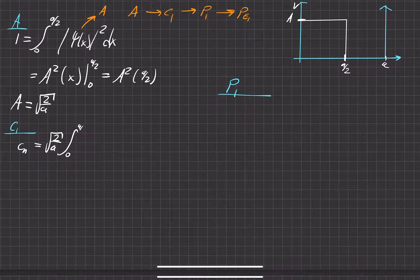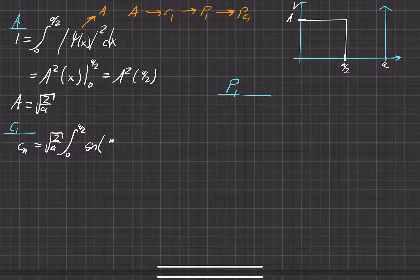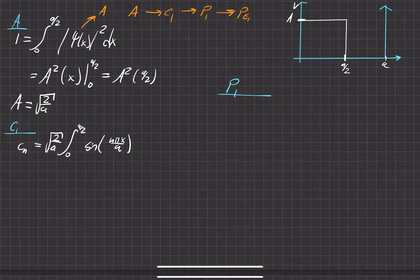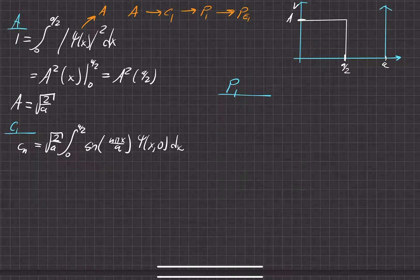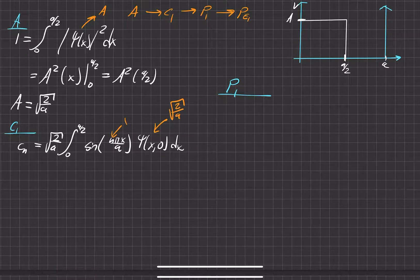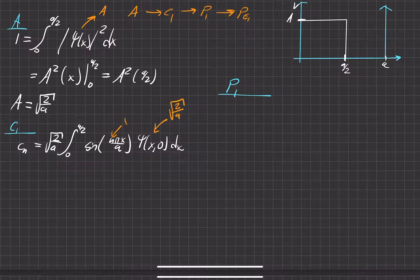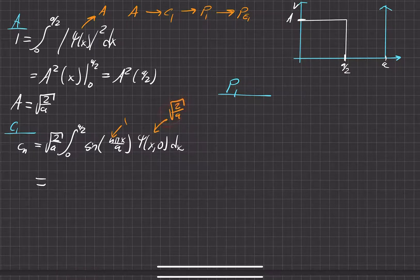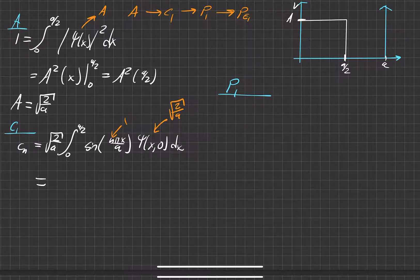From 0 to a over 2, then we do the sine of n pi x over a. And then that is times our wave function frozen at 0. And we just found out what that wave function is. That wave function is just equal to A, and we found that to be square root of 2 over a. And then this n is just 1 because we're trying to find the first energy state here. So go ahead and plug in the math. Since this is square root of 2 over a, and then multiply this by square root of 2 over a, we're just going to get 2 over a.